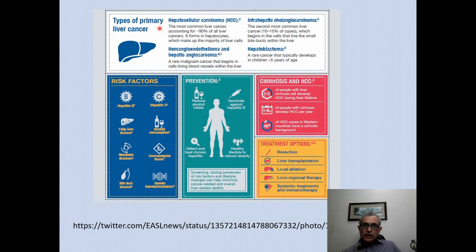Regarding primary liver cancer types, hepatocellular carcinoma (HCC) is the most common, accounting for approximately 90 percent of all liver cancers, forming in the hepatocytes. Intrahepatic cholangiocarcinoma accounts for 10 to 15 percent of all cases, beginning in cells lining small bile ducts within the liver. Hemangioendotheliomas, hepatic angiosarcomas, and hepatoblastomas are other rare liver tumors. Risk factors include hepatitis B, hepatitis C, fatty liver disease, alcohol consumption, and metabolic diseases.